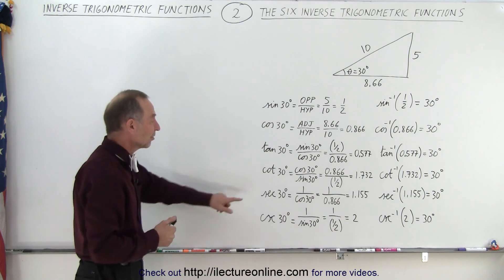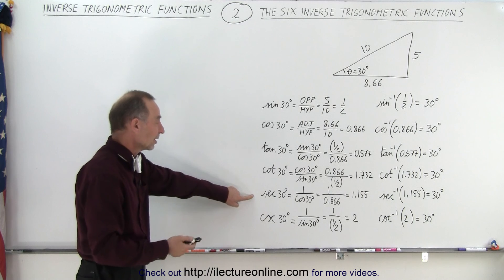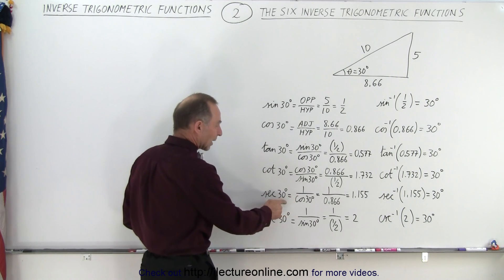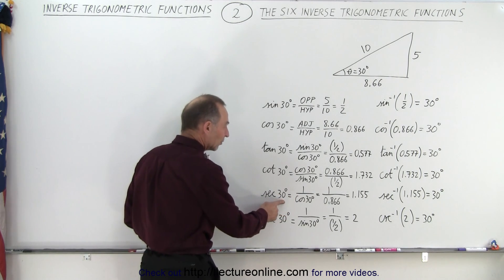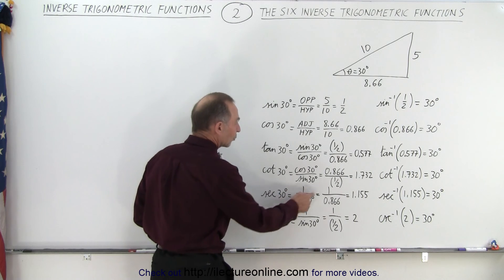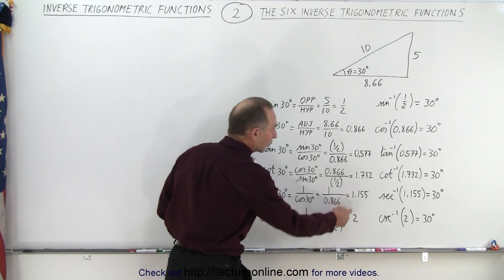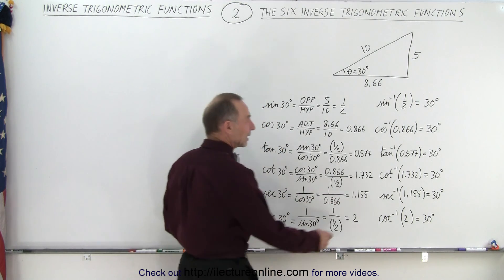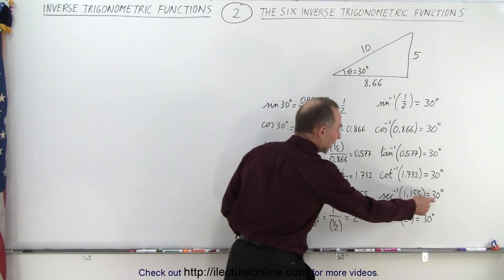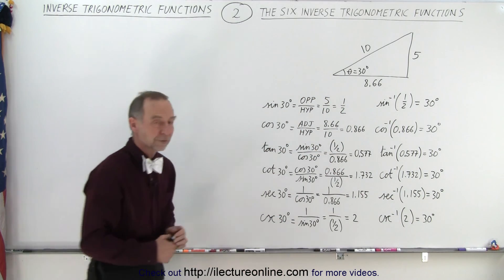The secant by definition is equal to 1 over the cosine. In the case that the angle is 30 degrees, 1 over the cosine of 30 is 1 over 0.866, or 1.155. So if we take the inverse secant of 1.155, we get back the angle of 30 degrees.